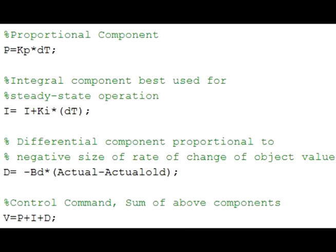Component D is not a function of dT, but of the change in the actual positions between updates. D is negative for a positive difference.